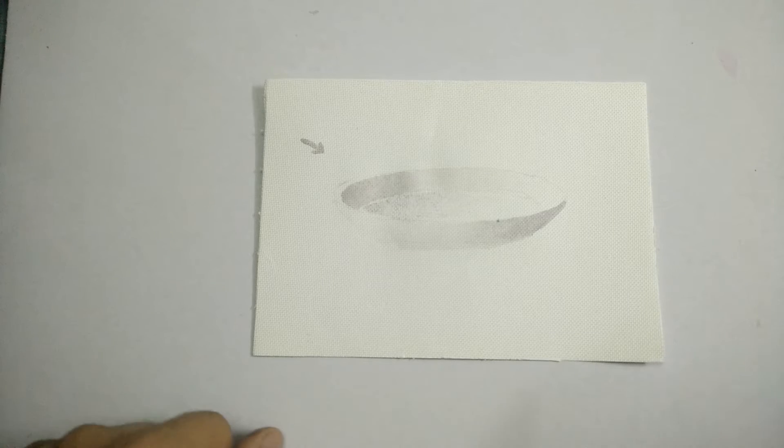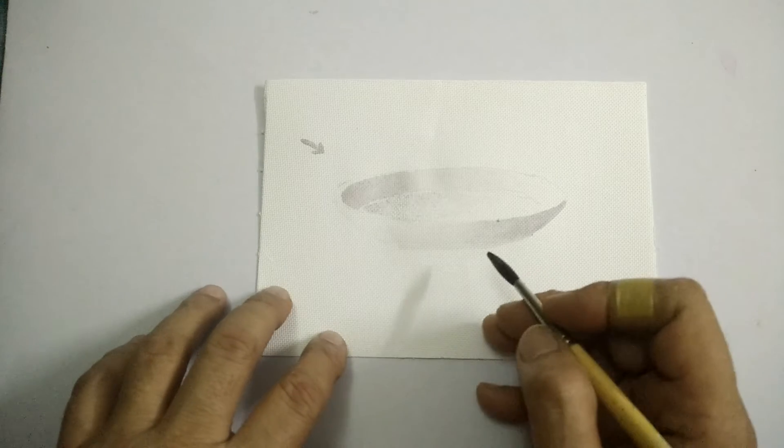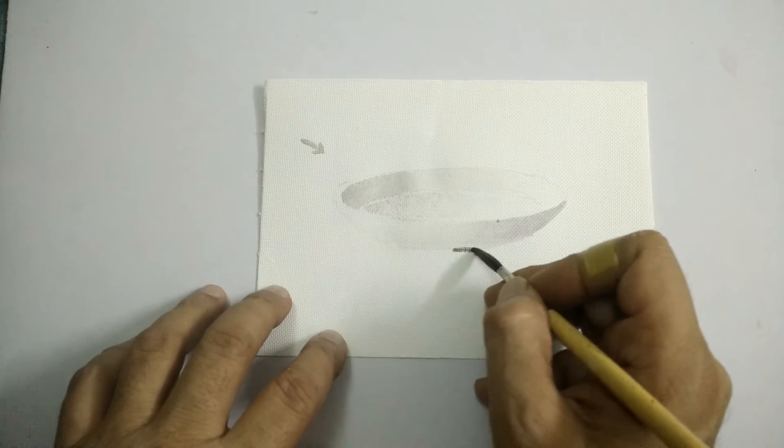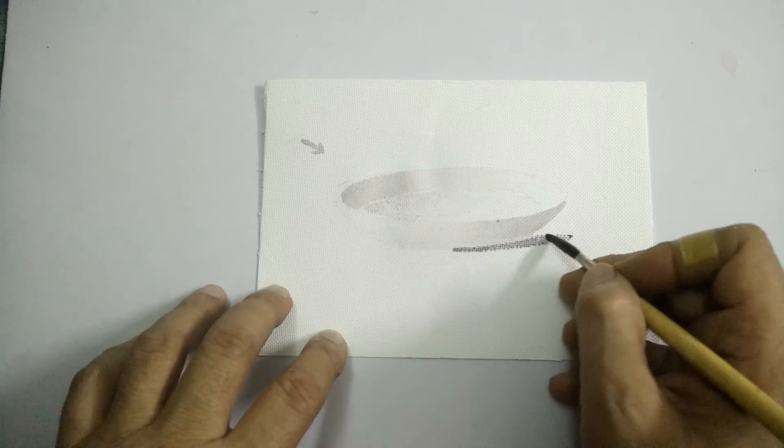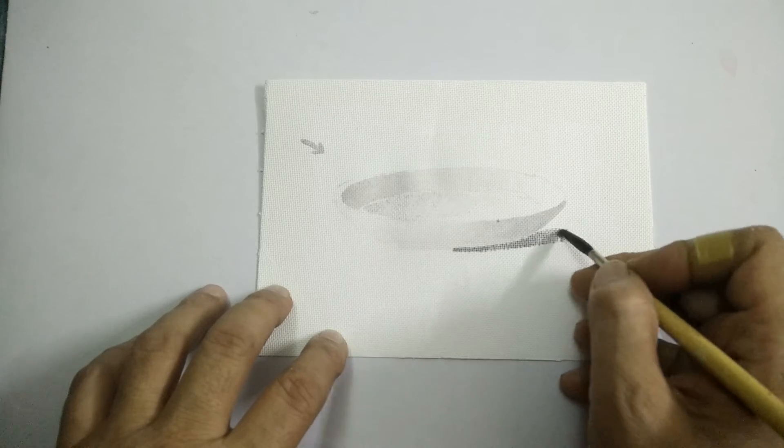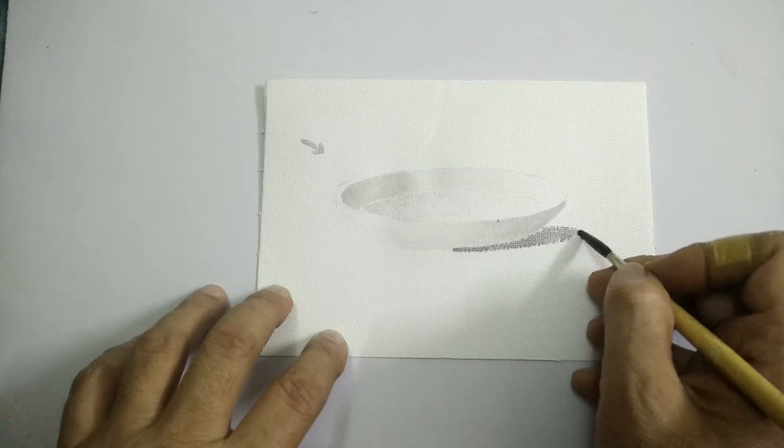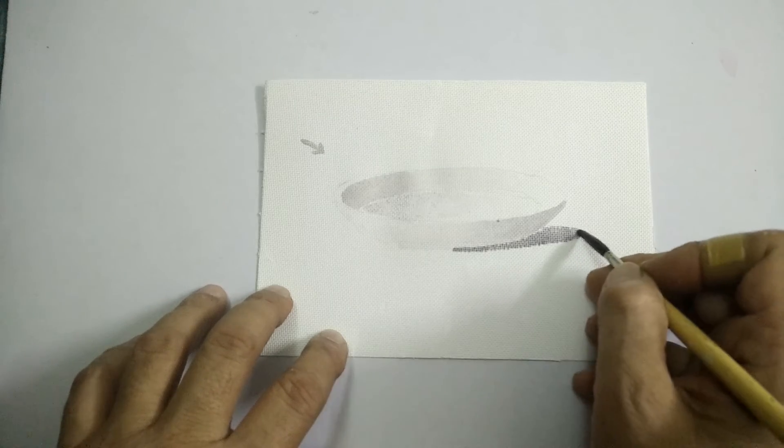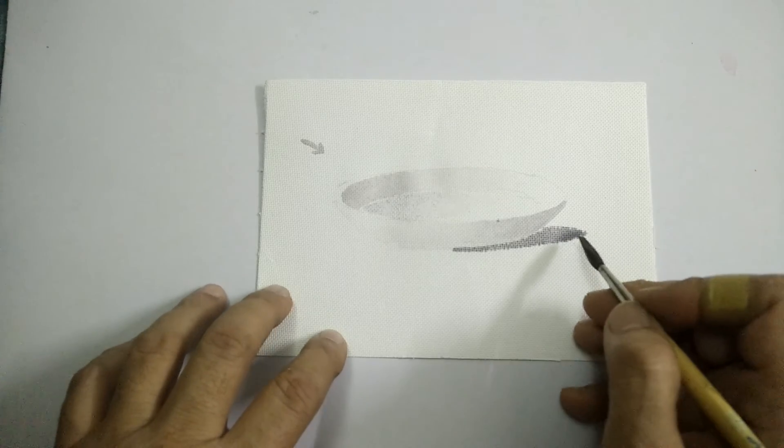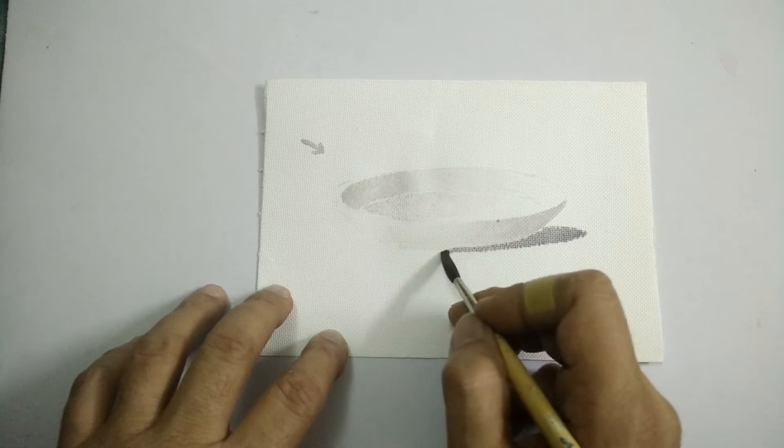Finally, take the same Payne's gray and add it on the right in an oval shape to indicate the shadow cast by the pan on the floor or surface.